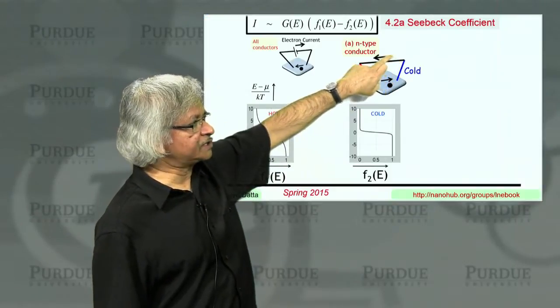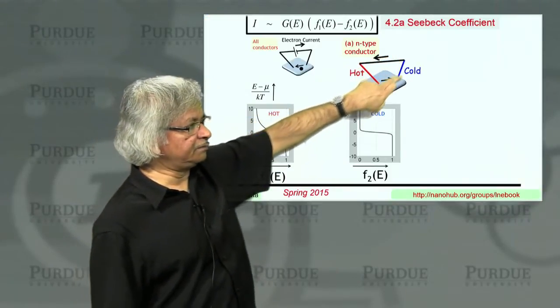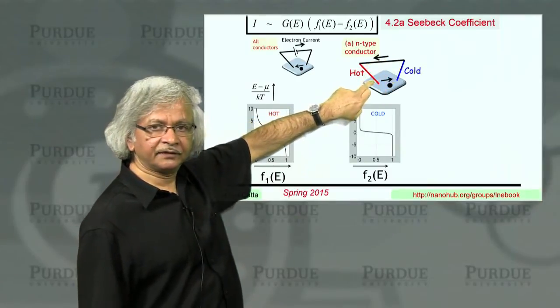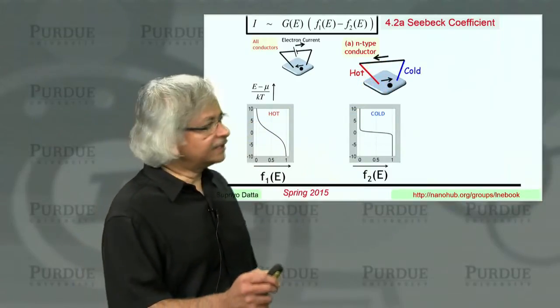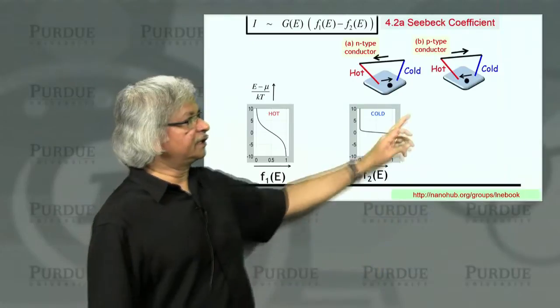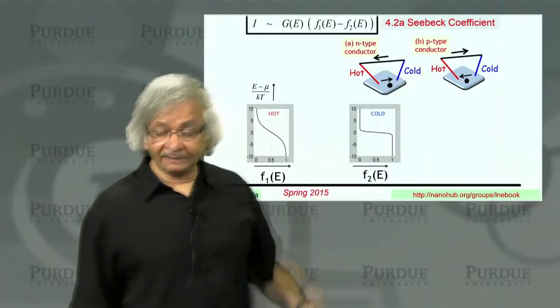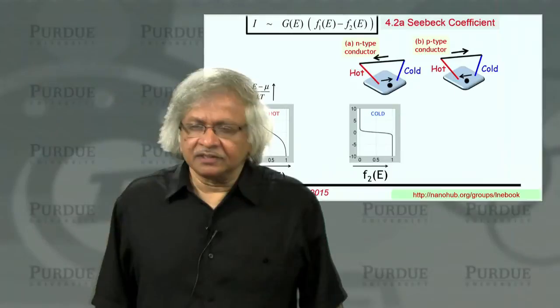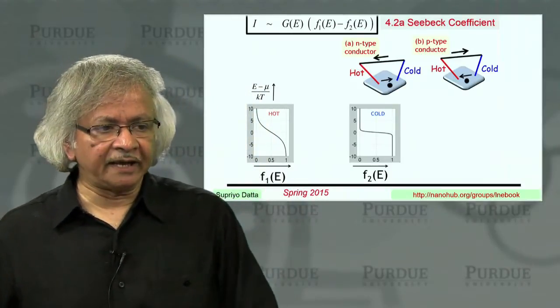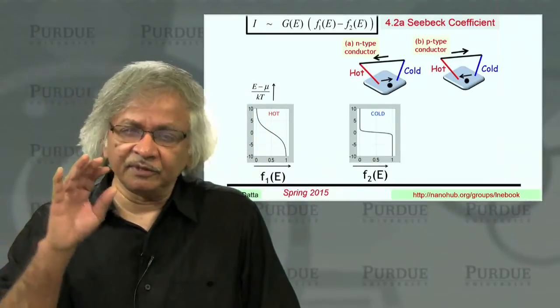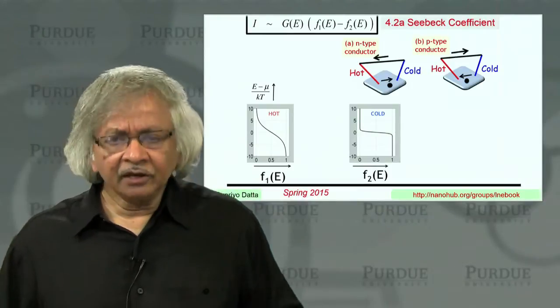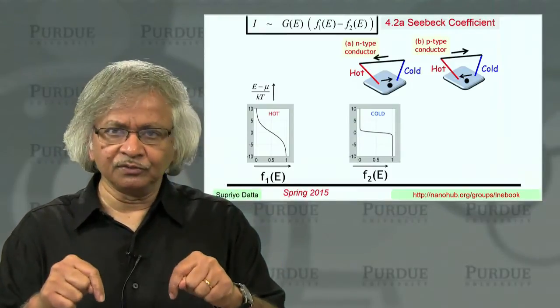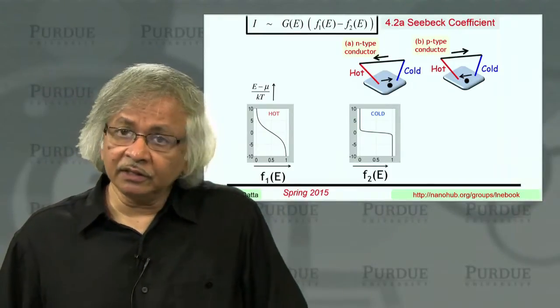And they will come out and externally they will flow to complete the circuit like so. On the other hand, there's P-type conductors where electrons will actually flow in the opposite direction. This is actually a standard experiment you do in semiconductor labs. If you want to find out if a material is N-type or P-type, you put down these hot point probes and look at which way the current flows.